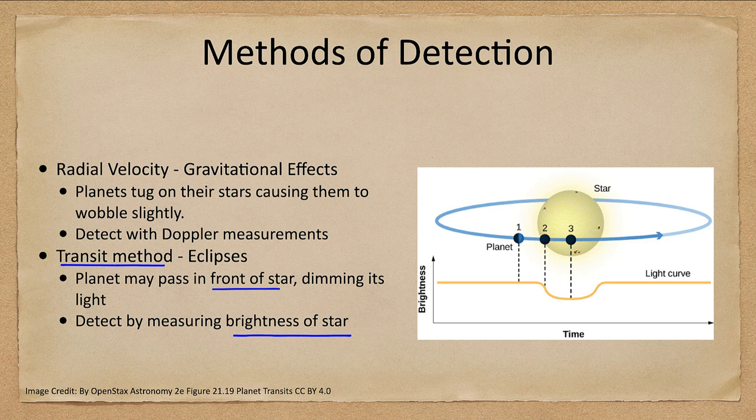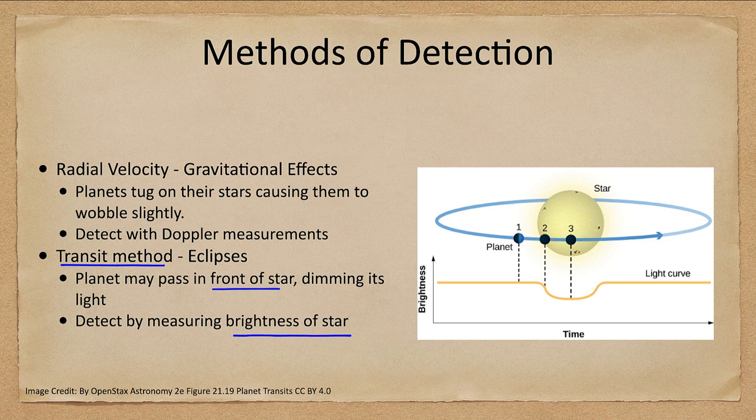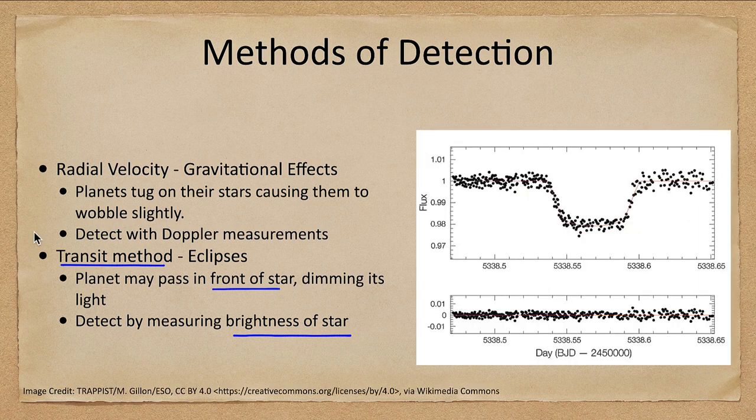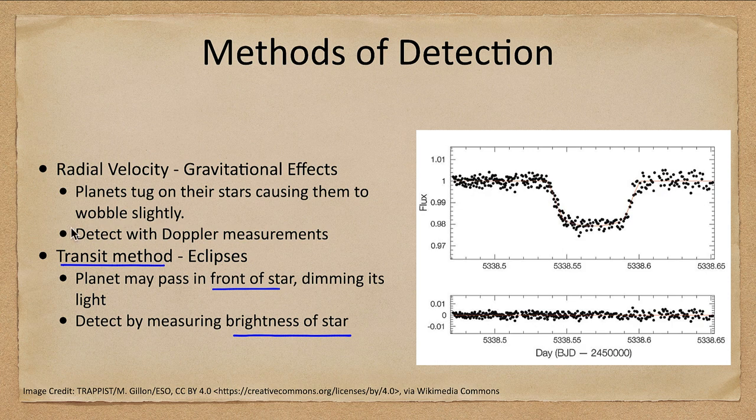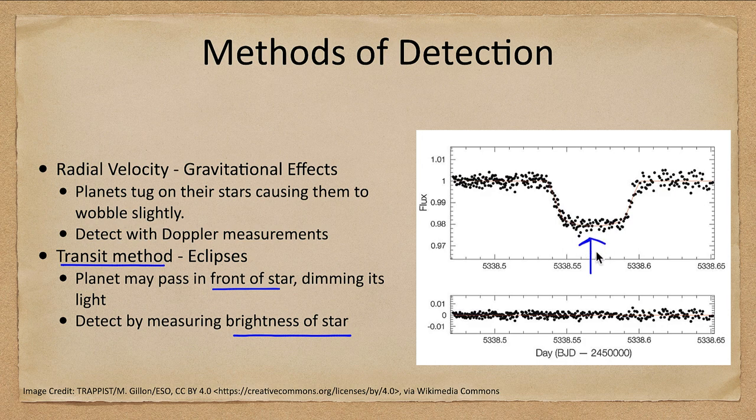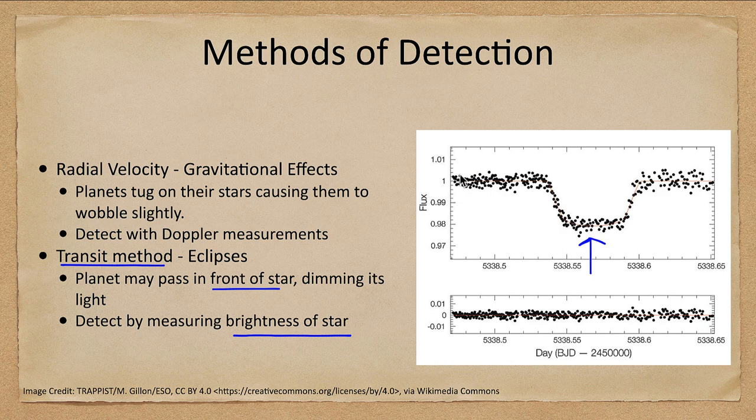When the planet passes in front of the star, the planet is blocking out some of the star's light and therefore the star will get a little bit fainter. We can see that in what we call a light curve such as something like this. We can see how the light dimmed here when the planet was passing in front of the star and then started at one level and went back to that same level.